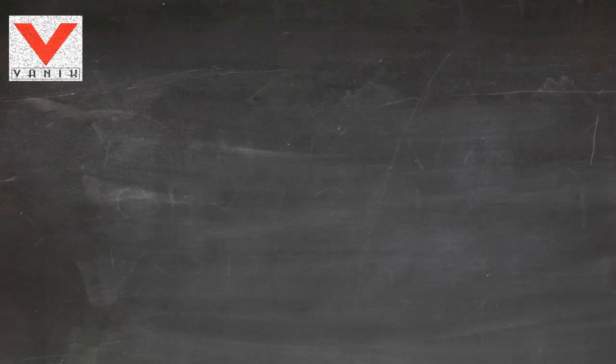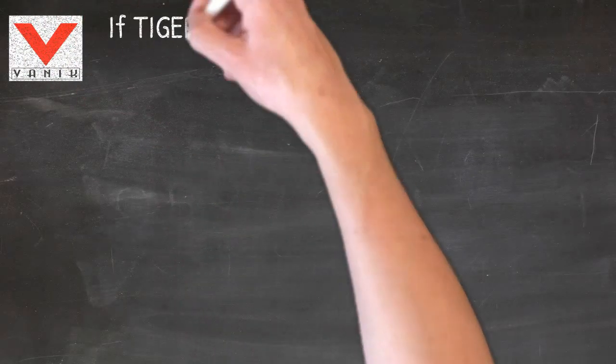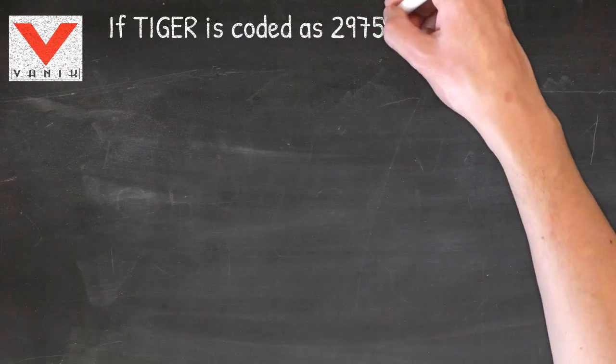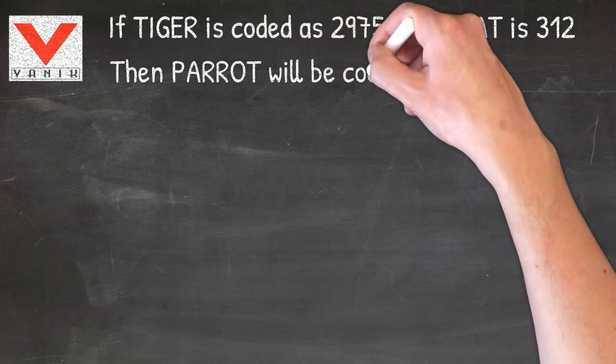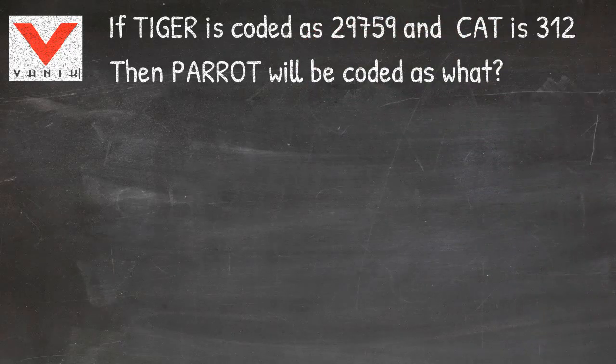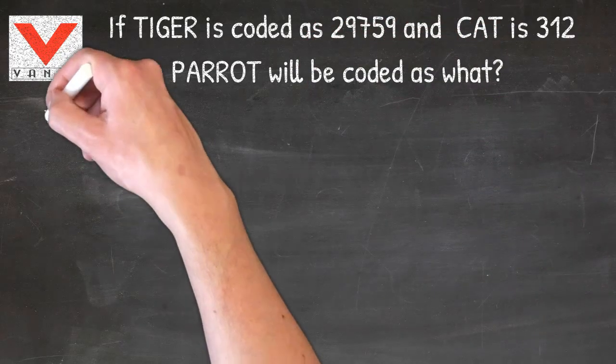Warwick Reasoning tips. If tiger is coded as 29759 and cat is 312, then parrot will be coded as what?